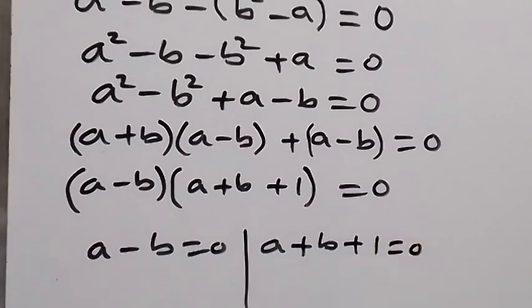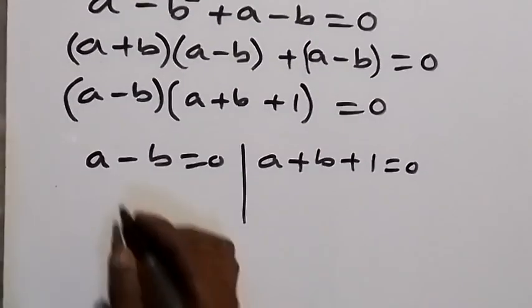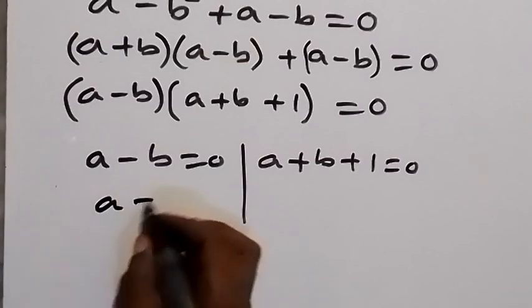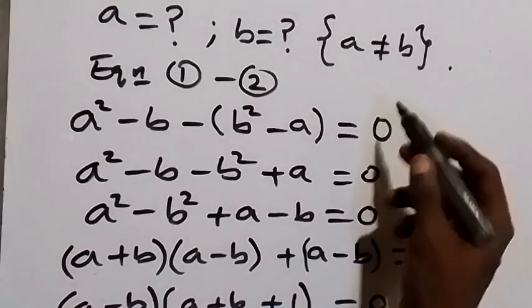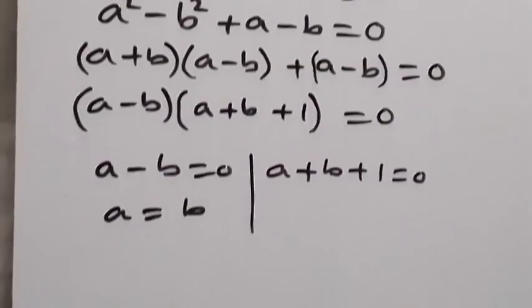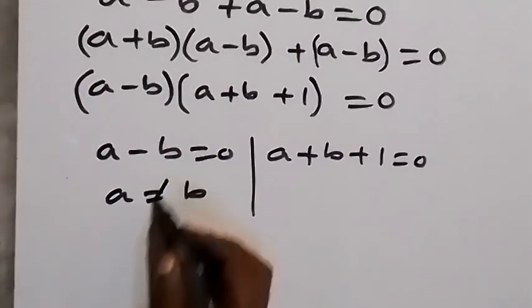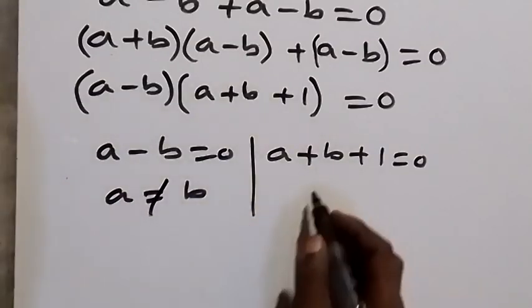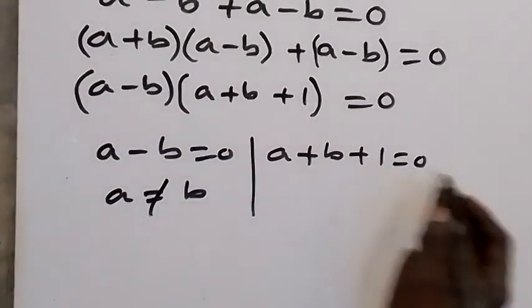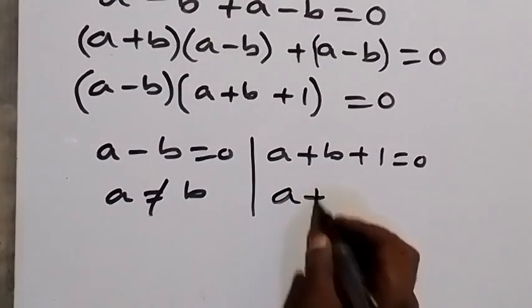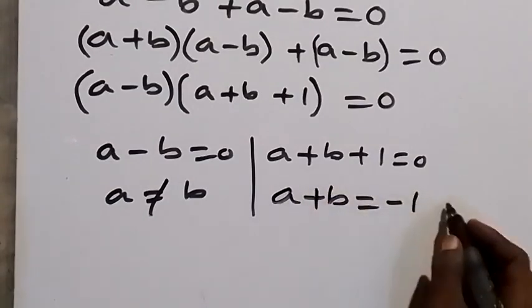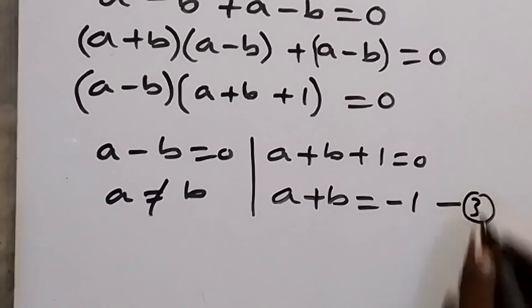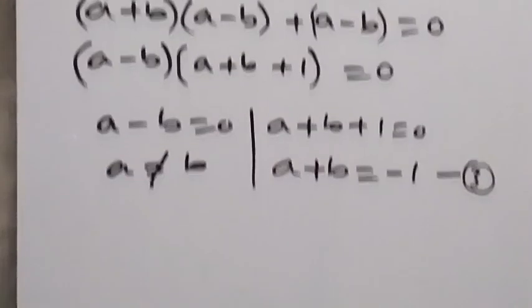From this we have two cases: a minus b equals zero, giving a equals b; or a plus b plus 1 equals zero. Since the problem states a is not equal to b, we discard the first case. From the second case, we take 1 to the other side: a plus b equals minus 1. Label this as equation 3.